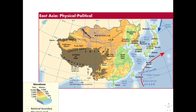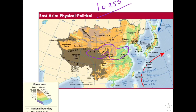Moving on to river systems — China has some very important rivers. One is the Yellow River, located in the northern region of China. The Yellow River gets its name from the yellowish-brown silt, or topsoil, that it carries. It carries tons of this fine yellowish-brown topsoil called loess — spelled L-O-E-S-S, not like the opposite of more. That's how it's pronounced: loess. Not 'low-s' — if you say that in class, shame on you.